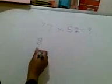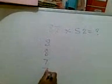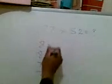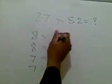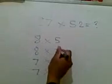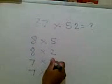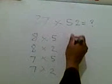Think about it like this. Write down the 8, write down the 7, times 5, 2. Draw the shape.